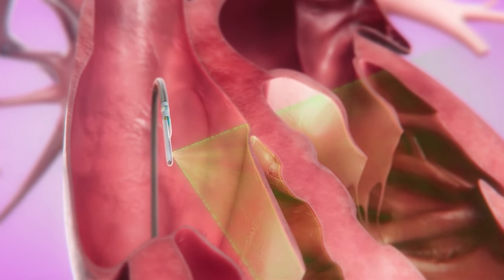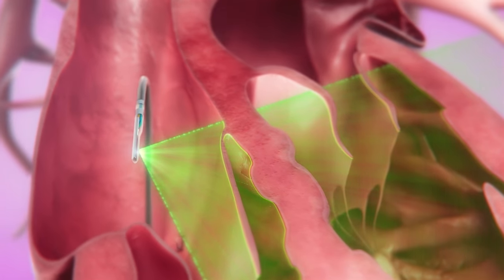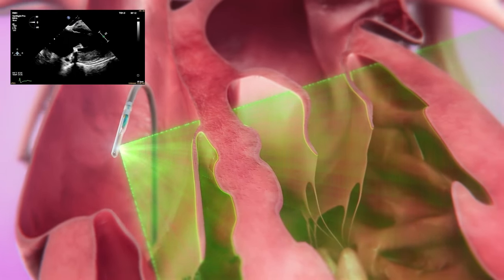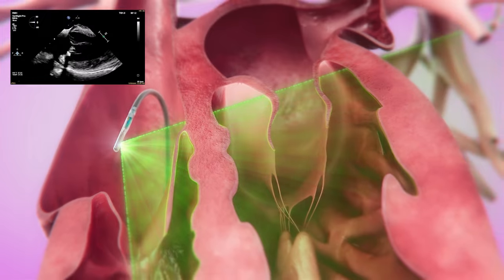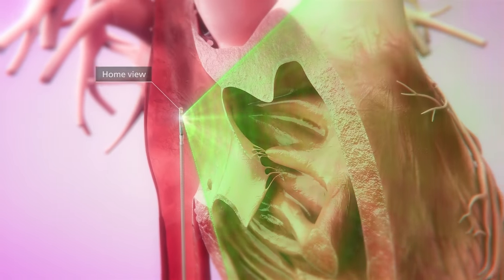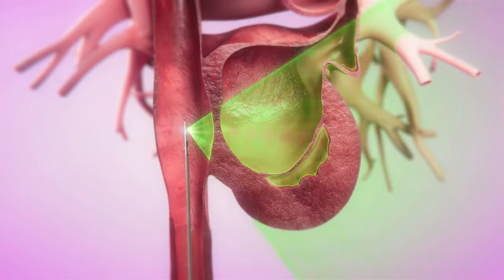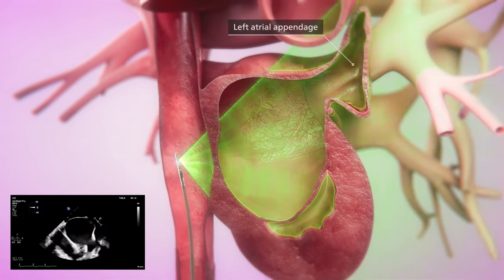Because of the flexible atraumatic design, responsive steering and far field penetration, it is possible to assess for pericardial effusion from the right atrium. Far field imaging is also useful in assessing the left atrial appendage before crossing the atrial septum.